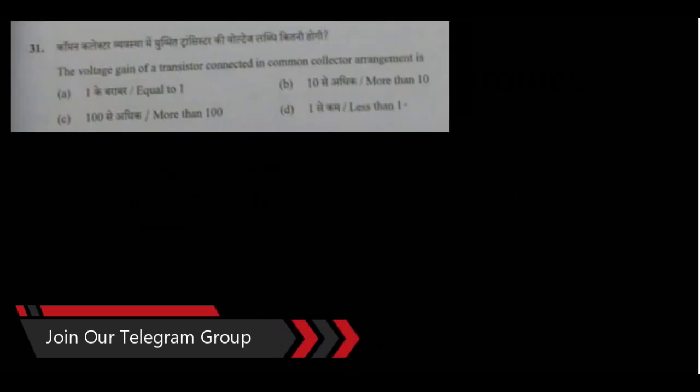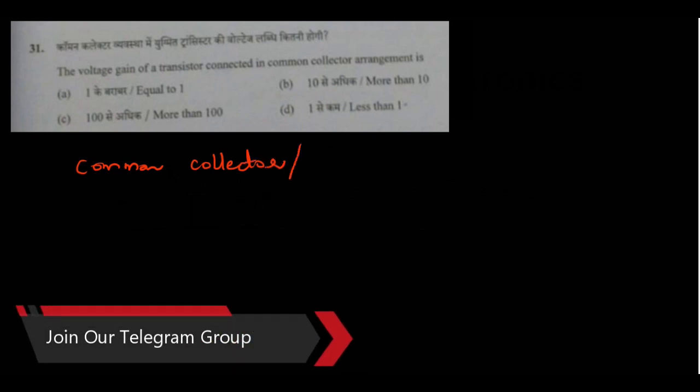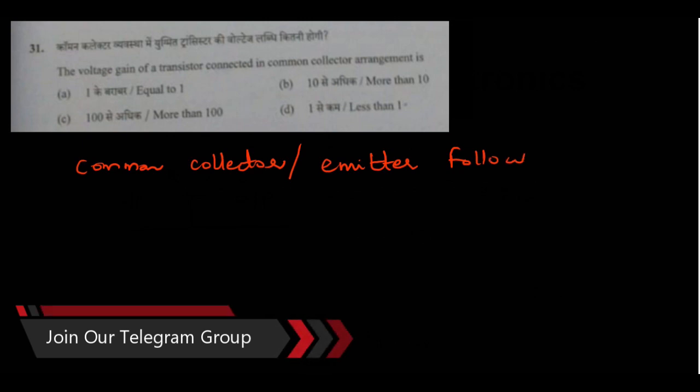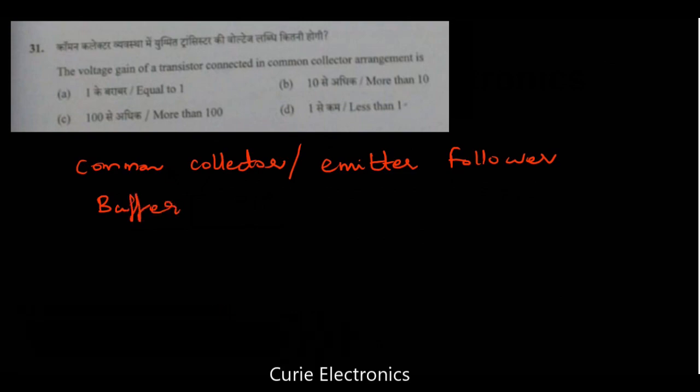Question number 31. The voltage gain of a transistor connected in common collector arrangement. When we say common collector arrangement, this common collector can be called as emitter follower. Or what voltage gain is less than 1. So the answer is option D, that is less than 1.